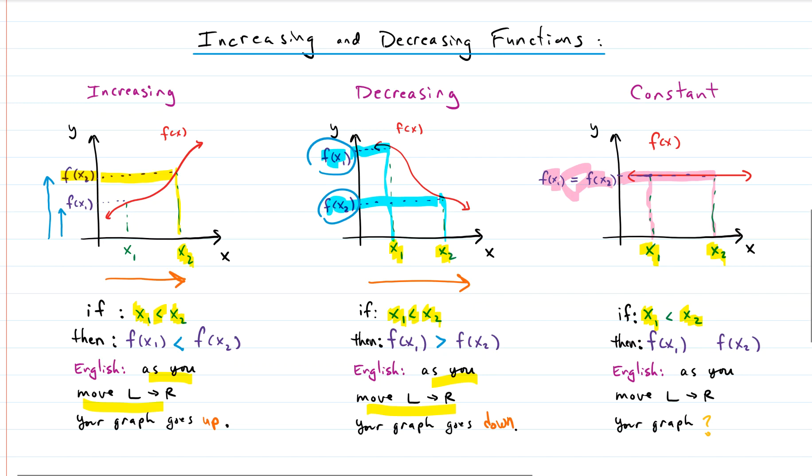You can see right here they're equal. So for a constant function, f of x1 equals f of x2. In plain English, as you move from left to right on your graph, your graph does what? Your graph stays the same. Remains constant.